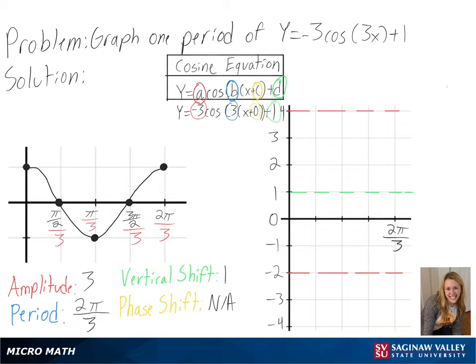So we will start at 0, go up to pi over 6, up to pi over 3, back down to pi over 2, and further down to 2 pi over 3.